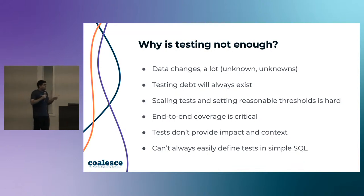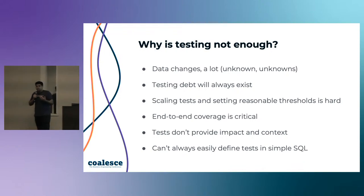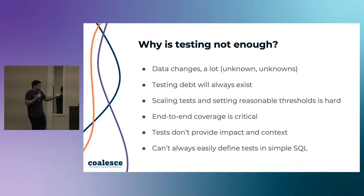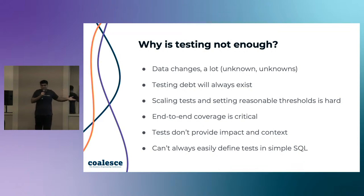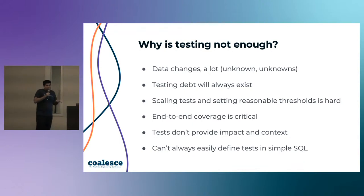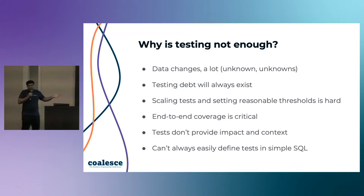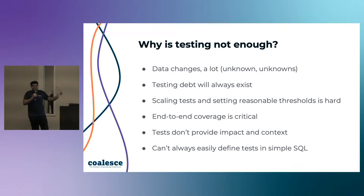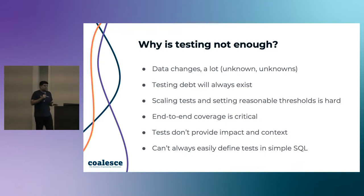Providing impact and context is also critical. If a test fails, the immediate question is: so what? What do I do? How does this matter? Who wrote this? Why is this test paging me in the middle of the night? Does the null rate have an actual consequence? Or was it something a developer three years ago wrote and moved on from? That context is very important. And of course, you can't always define things in SQL — you have to leverage other technologies as well.